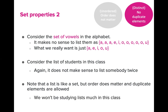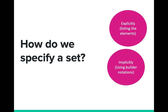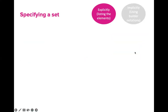How do we specify a set? There are different ways of specifying a set. We can explicitly specify a set, or use an implicit definition. When using an explicit definition, we simply list down the elements of a set. However, there are cases where this is difficult, especially if the number of elements is large. So we can use an implicit definition using set builder notation.